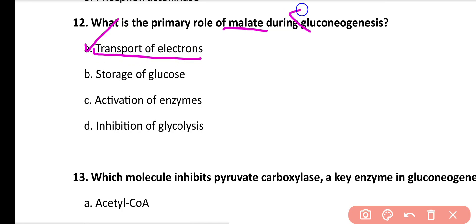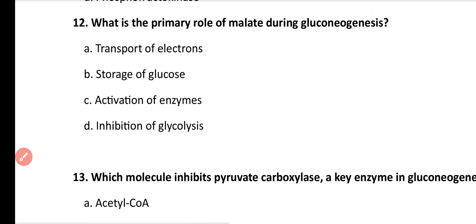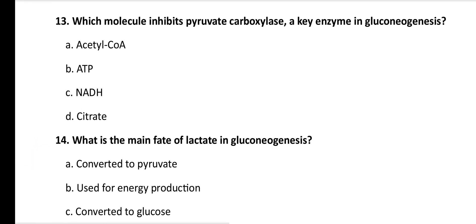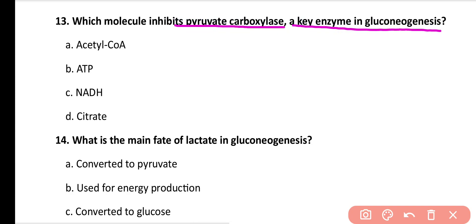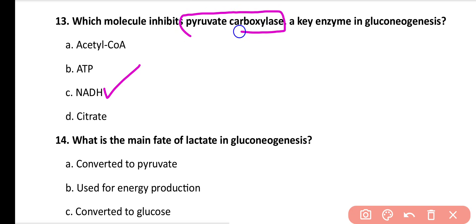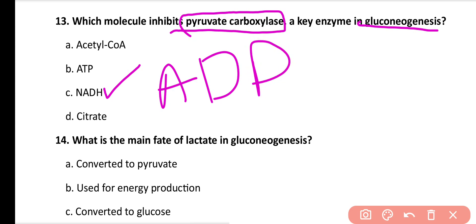Question number 13: Which of the following molecules inhibit pyruvate carboxylase, a key enzyme in gluconeogenesis? Options: acetyl coenzyme A, ATP, NADH, citrate. Correct answer is option C. NADH is an inhibitor of pyruvate carboxylase enzyme during gluconeogenesis. In addition to NADH, ADP and glucose are also important inhibitors of pyruvate carboxylase. Note: acetyl coenzyme A is an activator of pyruvate carboxylase.